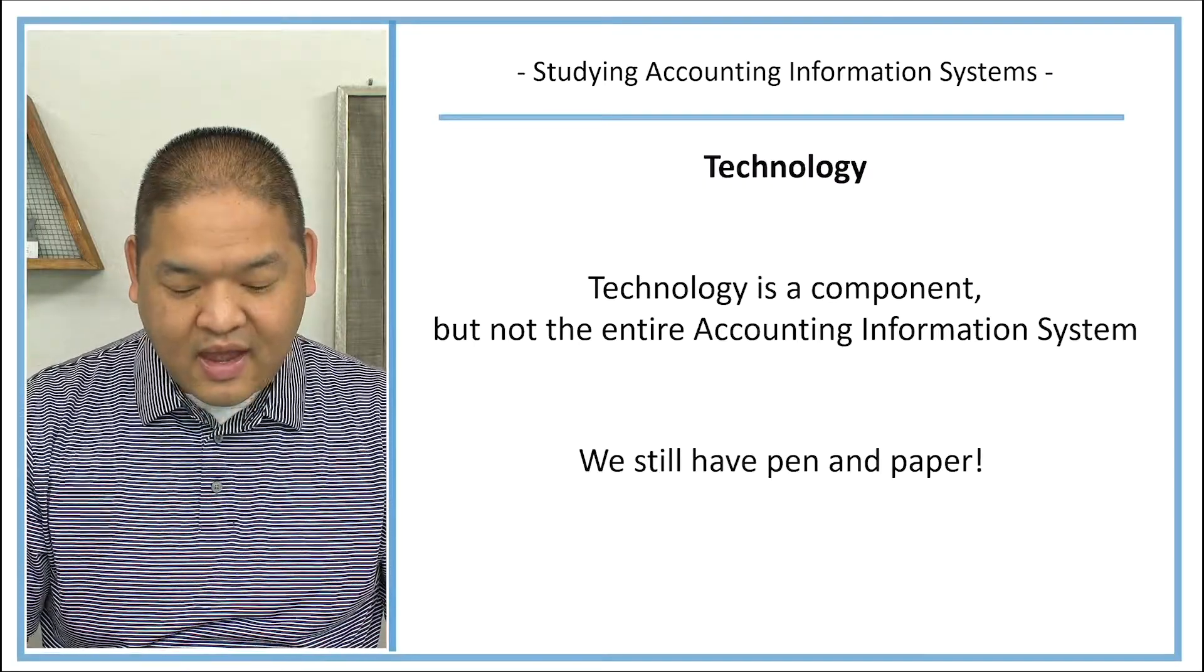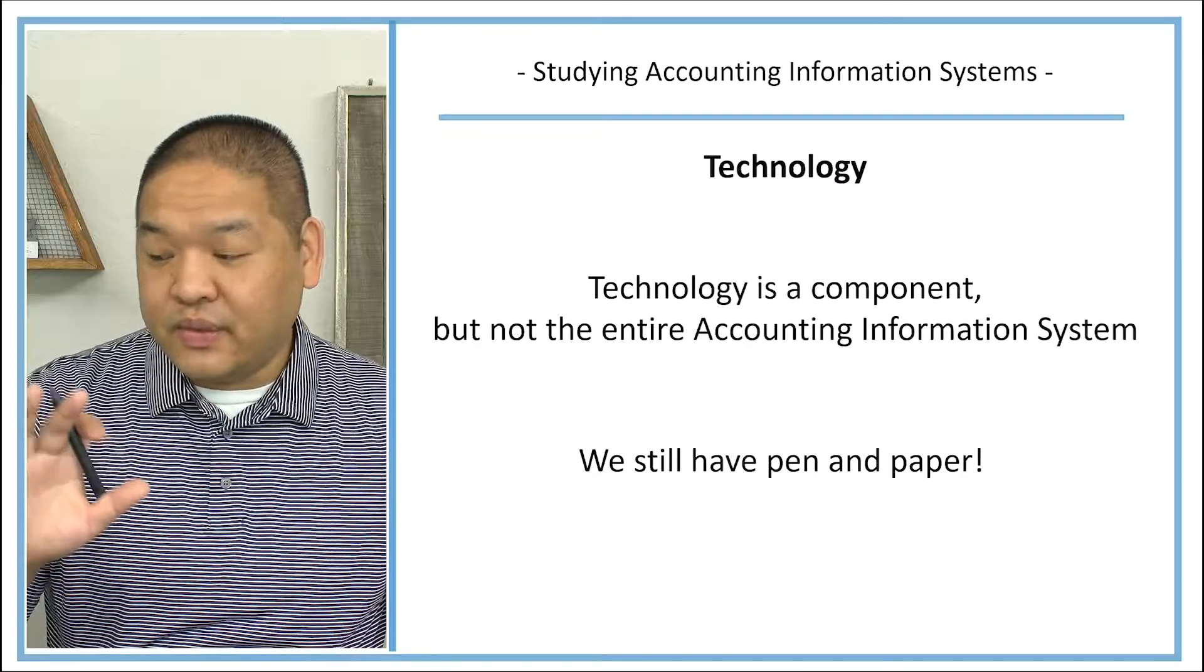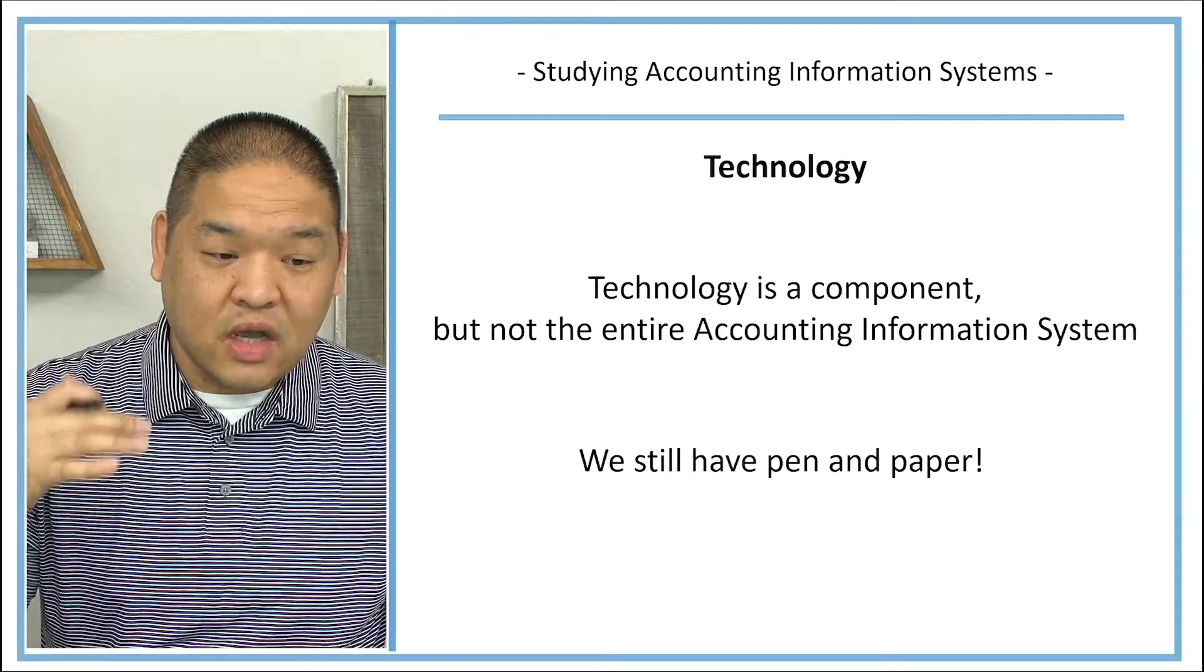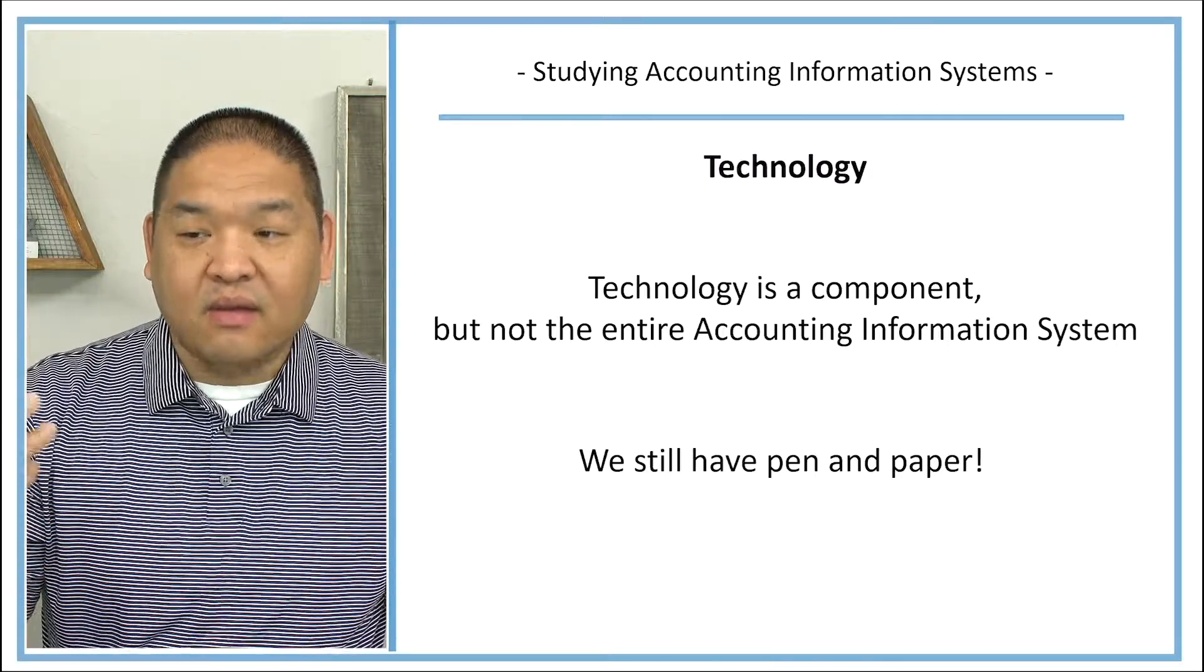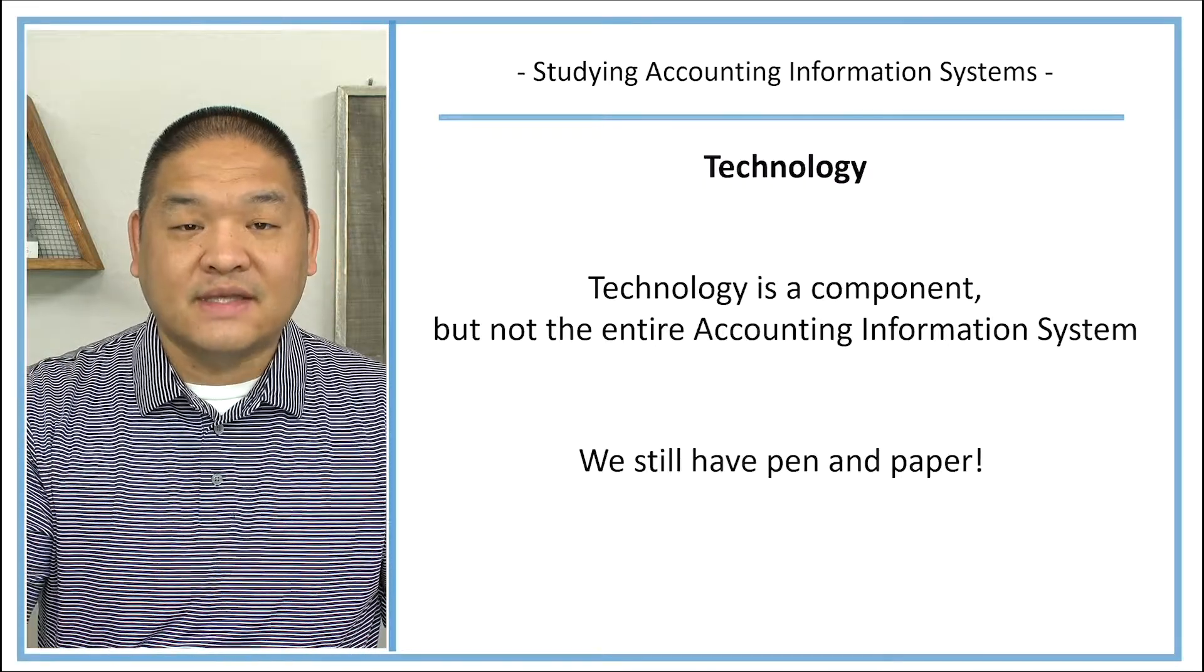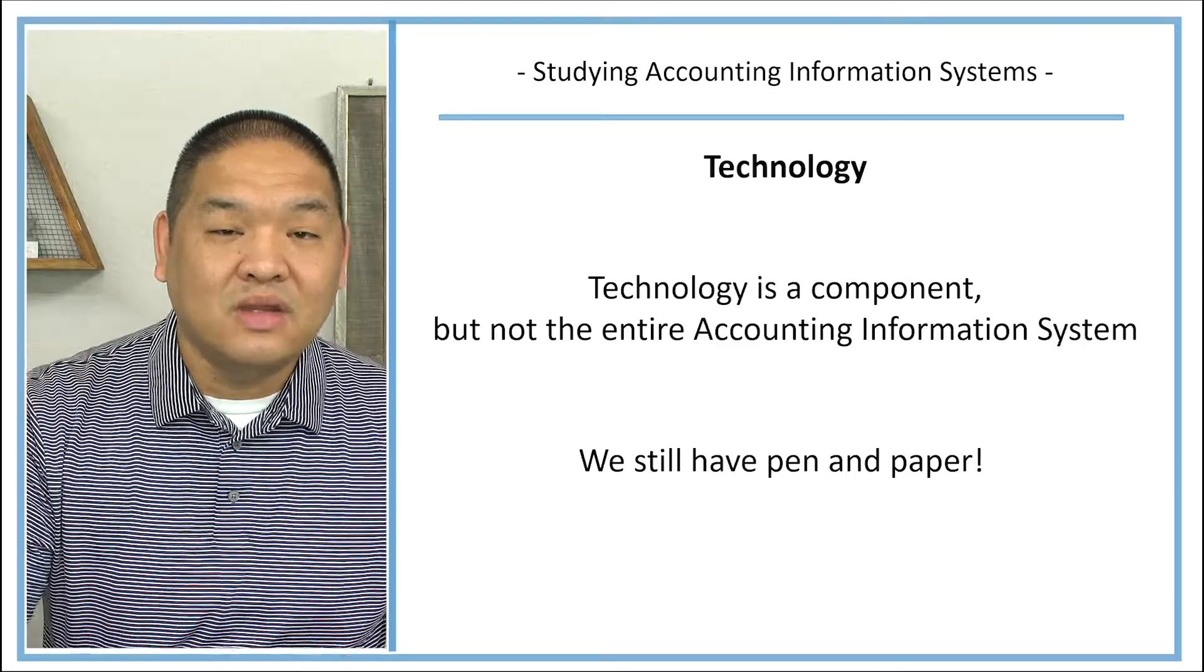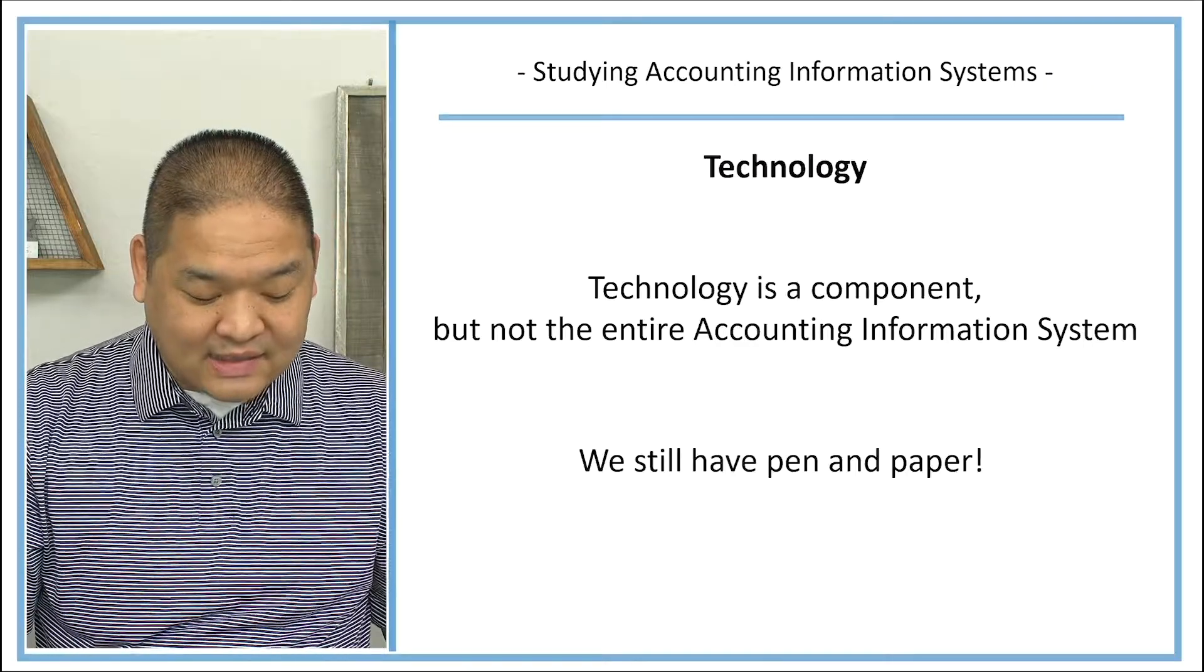So when we think about accounting information systems and we're trying to study accounting information systems, don't always think that everything that we're doing is technology-based. Technology is a tool within AIS. It is not AIS as a whole. So just understand that, because it's going to seem like that, especially when we get to section two where we're talking a lot about computer-based technology. We're talking a lot about that and how it affects AIS, but it isn't the only thing that affects AIS as a whole.